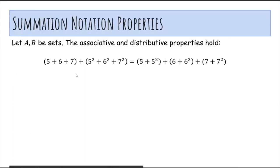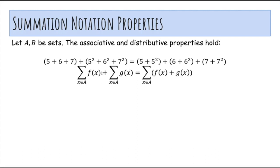Okay, so in general, if a and b are sets, the associative and distributive properties still hold the summations, just like they do with addition. So you can move parentheses around, that's the associative property, and in summation notation, you can just change the order in which you add these terms. So if you sum over all the elements x and a twice, you can just group the terms together.